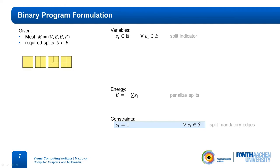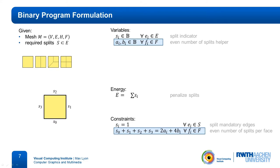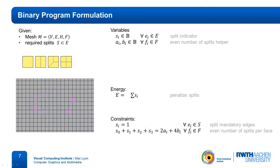The templates we want to use are, from left to right: no edge, two opposite edges, two consecutive edges, and all four edges split. To apply these templates, we have to ensure that the number of split edges per face is even. In our binary program formulation, this is expressed with an equality constraint using two binary helper variables, expressing that the sum of split-indicating variables is either 0, 2, or 4. The solution of this binary program yields the refinement with the smallest number of additional split edges, but this small number of splits comes at the cost of adding many Y-configurations which insert singularities.